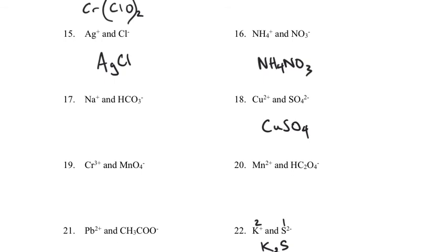Let's look at probably the most difficult one on this page: number 14. Fe plus two and PO4 negative three. We've got a plus two and a negative three, so think of this as finding the least common multiple of two and three, which would be six. I want a total of positive six charge and a total of negative six. For a total of positive six with each iron being plus two, I need three iron ions. For a total of negative six with each phosphate being negative three, I need two phosphate ions. The formula is Fe3(PO4)2 — three irons and two phosphate ions in parentheses with a subscript of 2.